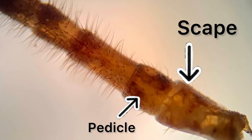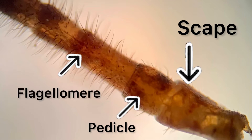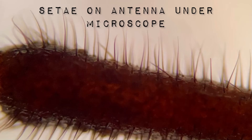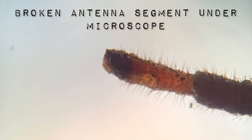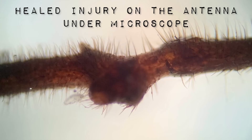The remaining antenna segments, called flagellomeres, make up the flagellum. The entire antenna is covered with small hairs called sensory setae, which help the insect locate its surroundings. The antennae are the most fragile part of the insect, so it is very common for them to break during the lifespan of the insect. Sometimes they will just get damaged slightly, and when the insect heals it creates an abnormal growth, just like this example.